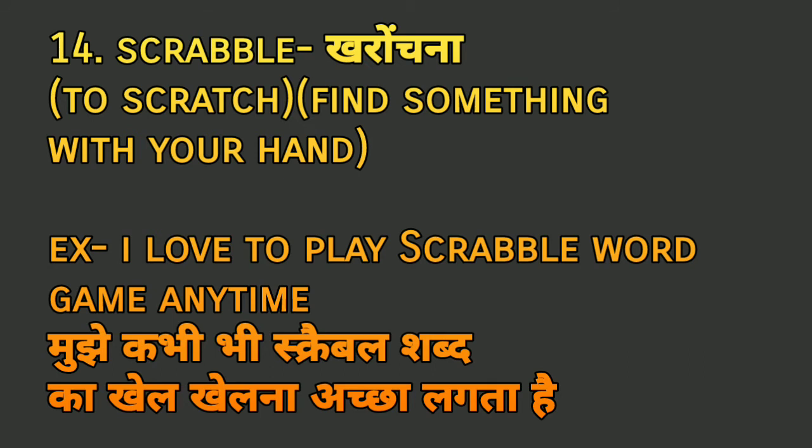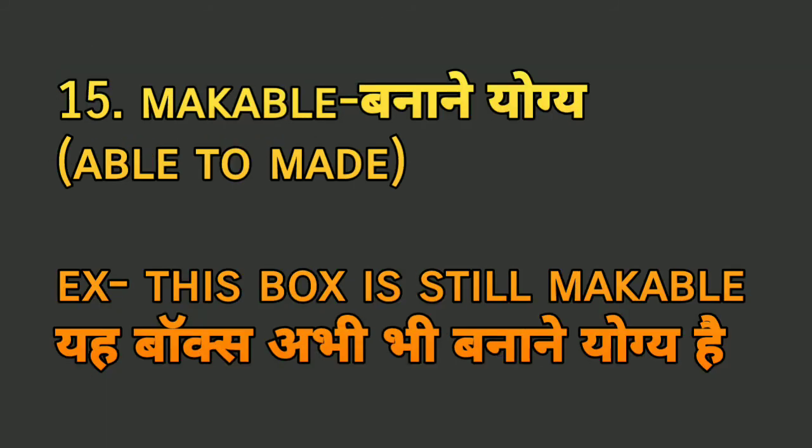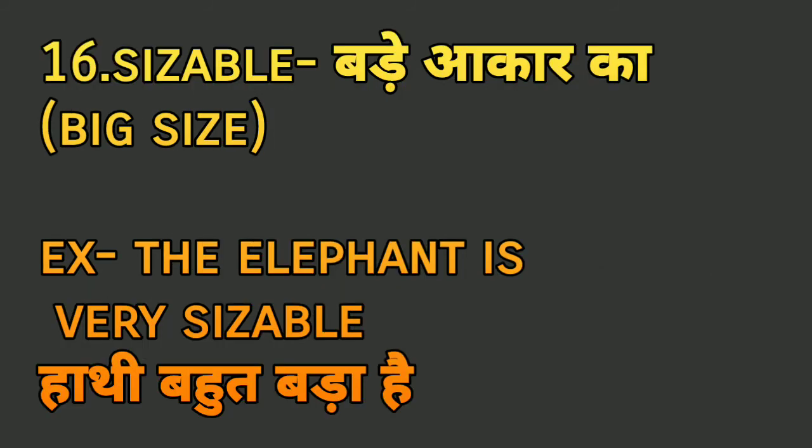The next word is 'scrabble', meaning 'kharachna' — to scratch or find something with your hands. For example: 'I love to play the scrabble word game anytime' — mujhe kabhi bhi scrabble shabd ka khel khelna achha lagta hai. Next is 'makeable', meaning 'banane yogya' — able to be made. For example: 'This box is still makeable' — yeh box abhi bhi banane yogya hai.